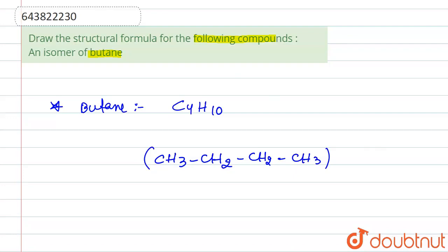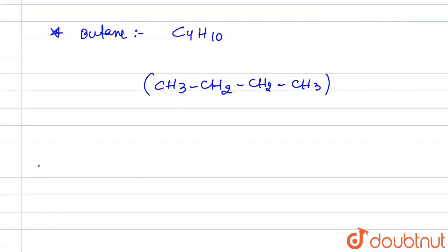Now the question is saying an isomer for butane. So if you draw isomer for butane having same molecular formula but different structure, let us see which structure is possible.